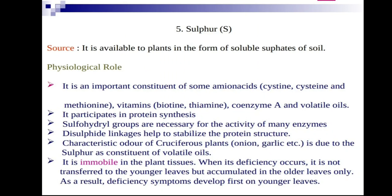Sulfur is available to plants in the form of soluble phosphates in the soil. It is an important constituent of some amino acids — cysteine and methionine — as well as vitamins biotin (B7) and thiamine, coenzymes, and volatile oils. Sulfur participates in photosynthesis; sulfhydryl groups are necessary for the activity of many enzymes, and disulfide links help stabilize protein structure.